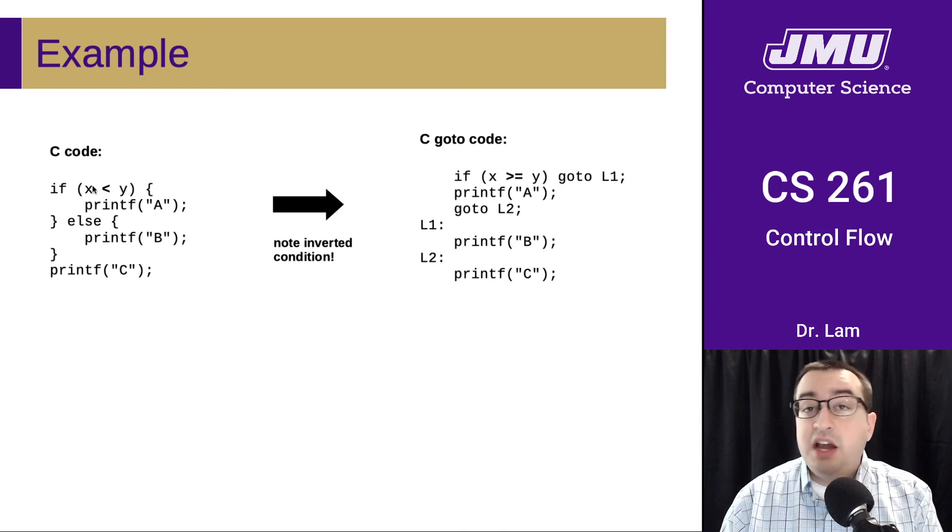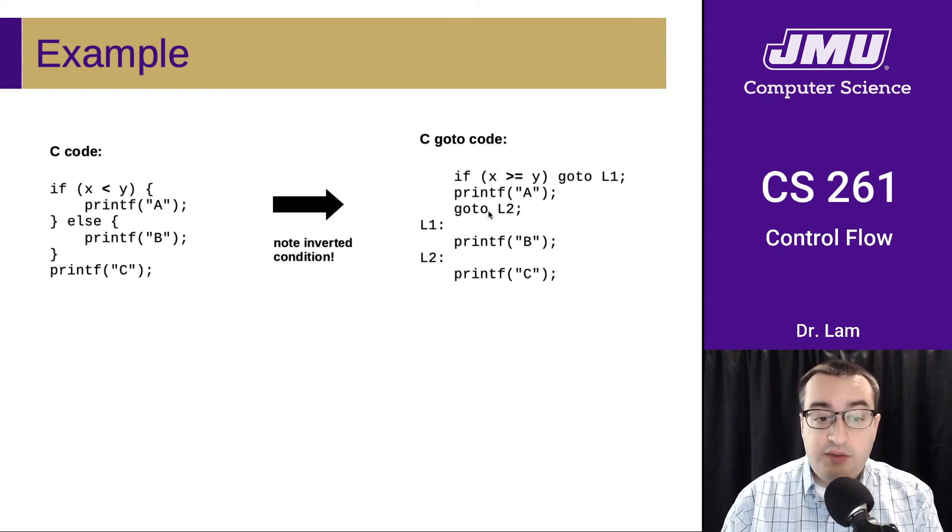Otherwise, if x was less than y, we'll execute that A print. We need to skip over the B part, so we'll have an unconditional goto at the end of this. And then at the end of the B part, we'll just fall through to C.